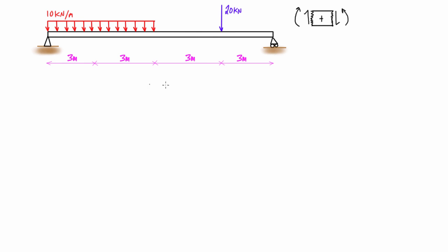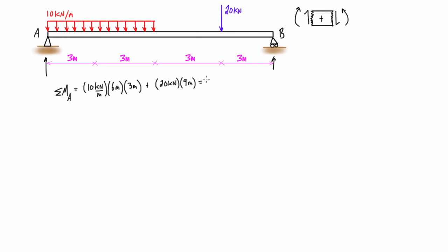With that said, let's go ahead and solve for the reactions. Calling the left side A and the right side B, when we take the sum of moments about A we find that B is equal to 30 kilonewtons, and taking the sum of forces in the y direction gives us A equal to 50 kilonewtons.